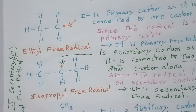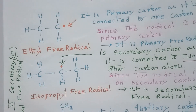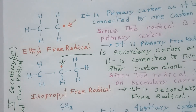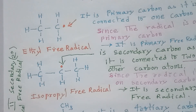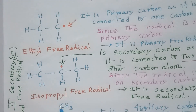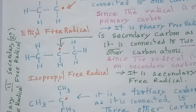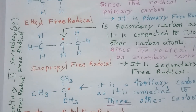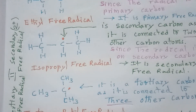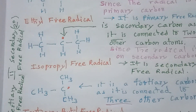Now let us see the tertiary or third-degree free radical. This is the tertiary butyl free radical: three CH3 groups are connected to a central carbon atom which carries the free radical. This central carbon is connected to three other carbons, so it is called a tertiary carbon. Since the free radical is present on the tertiary carbon, it is called a tertiary free radical.